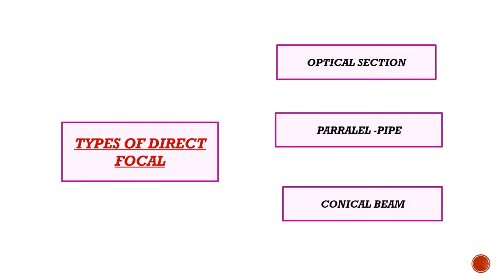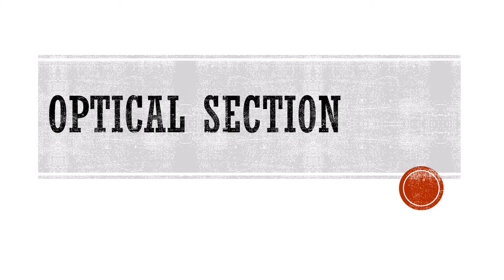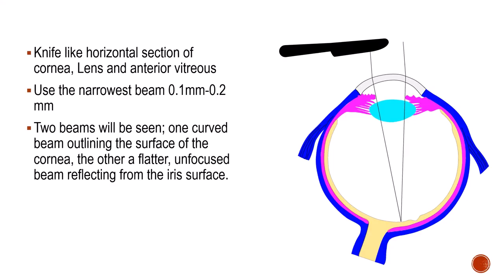Direct focal illumination can be of three types: the optical section, the parallel pipe illumination, and the conical beam. The optical section creates a knife-like horizontal section through the cornea, lens, and anterior vitreous. You can take sections at the corneal level, lens level, or anterior vitreous level. For the optical section, the beam must be very narrow — approximately 0.1 to 0.2 millimeters in thickness — which is very important.